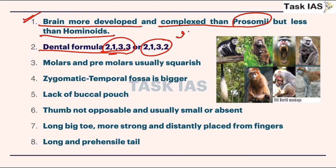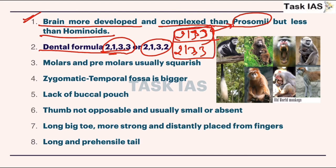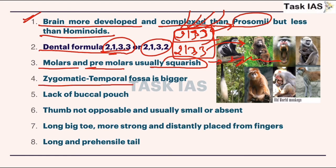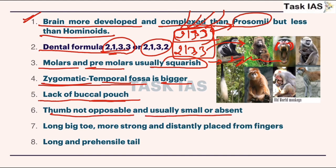Their dental formula is 2.1.3.3 and 2.1.3.2. Dental formula 2.1.3.3 is for the upper jaw — two incisors, one canine, three premolars, three molars. The zygomatic temporal fossa is bigger, showing these cheek bones are well developed. These features are also found in modern humans. Lack of buccal pouch, thumb not opposable, and usually small or absent — these are features of platyrrhini.